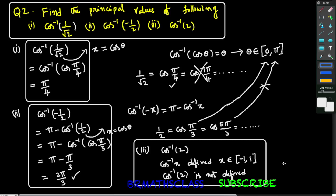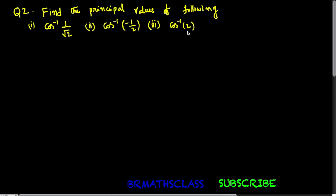Find the principal values of the following. If you observe all these three bits, the first bit is in the form of cos inverse of x, and the second bit is in the form of cos inverse of minus x.